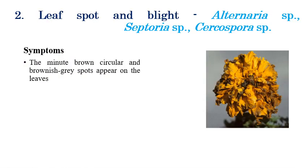The next disease is leaf spot and blight, caused by various species — Alternaria, Septoria, and Cercospora. Initially, brown or circular spots appear on the leaves.